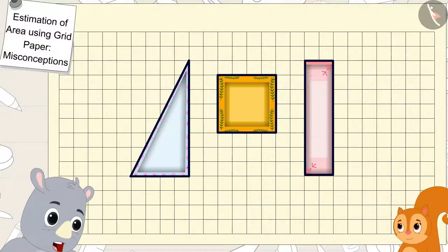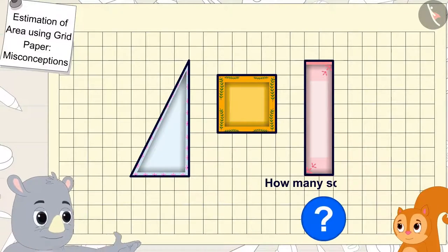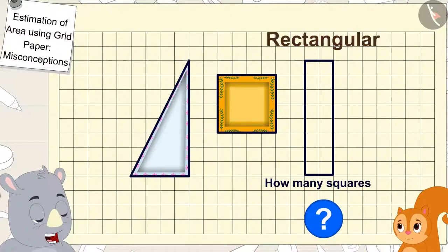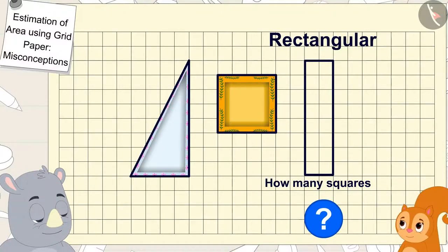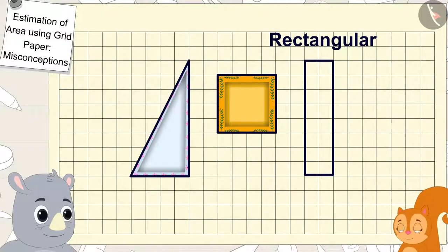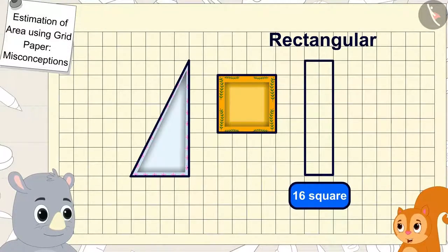Chanda, can you tell me how many squares are there in the area of the rectangular plate? Gaggoo asked Chanda. Chanda quickly counted. Sixteen squares.